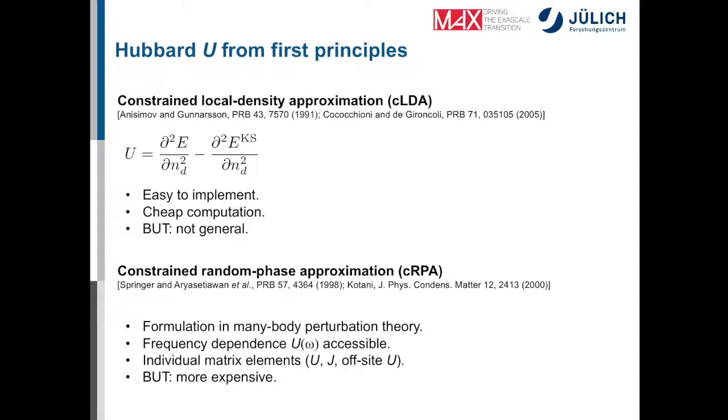But the problem is it's not very general. You miss certain important information about the Hubbard-U parameter. For example, the frequency dependence would not be accessible. And also, you cannot really calculate individual matrix elements like the Hund's exchange parameter or the off-site U parameter or any other matrix element that you might be interested in. So all these things are allowed or are possible within the constrained RPA approach. It's based on many-body perturbation theory. It's theoretically or in terms of methodology relatively close to GW. However, it is, of course, more expensive. But you will do anyway if you're interested in it. You can do calculations during the afternoon session.